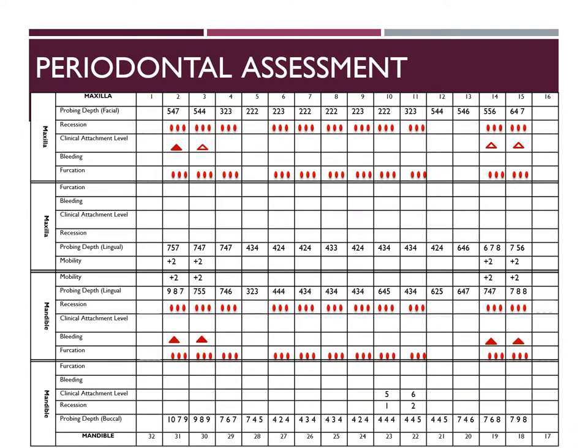As you can see on his periodontal assessment, he has generalized bleeding on most of his teeth. There are a couple of mobility areas as well as furcation areas. The bleeding occurs on most of the teeth and their probing depths are well over 4 mm. There are some pocket depths on teeth number 30 and 31 that include pockets of 8, 9, and 10 mm. There is also localized recession on teeth number 22 and 23 from 1 to 2 mm.